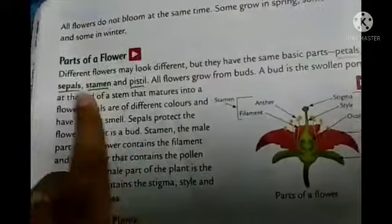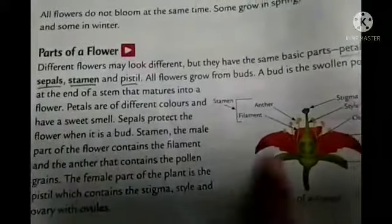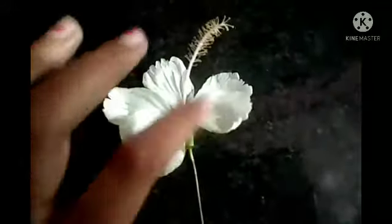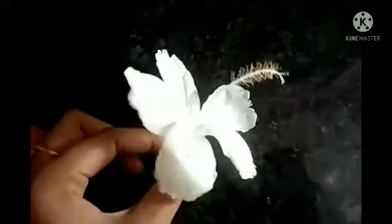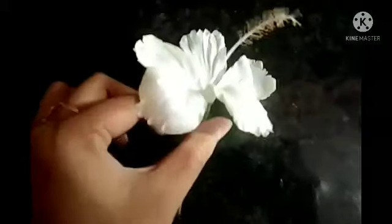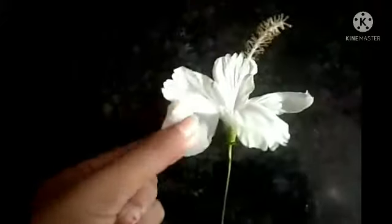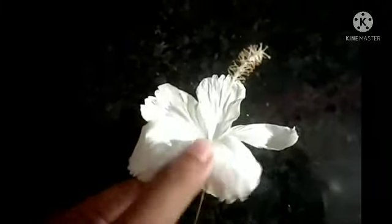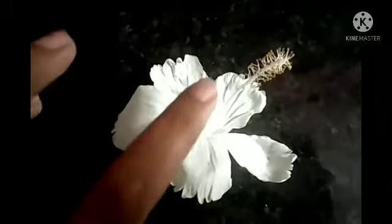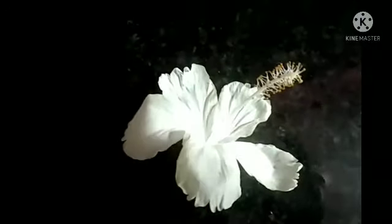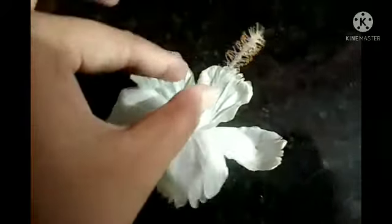Now we will talk about parts of a flower. I have a hibiscus flower here to explain with a practical example. I chose hibiscus because each and every part is clearly visible, making it easy to understand. The basic parts of the flower are petals — you can see these white petals on this hibiscus — and sepal, which is the green part. There are also male and female parts together in a flower: the stamen and the pistil.